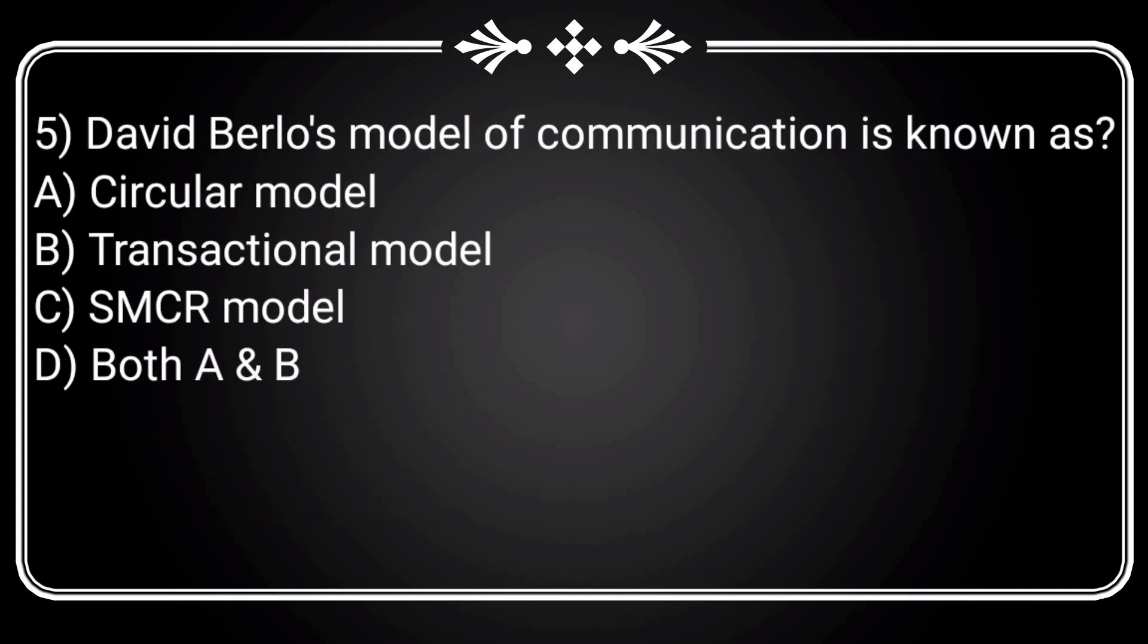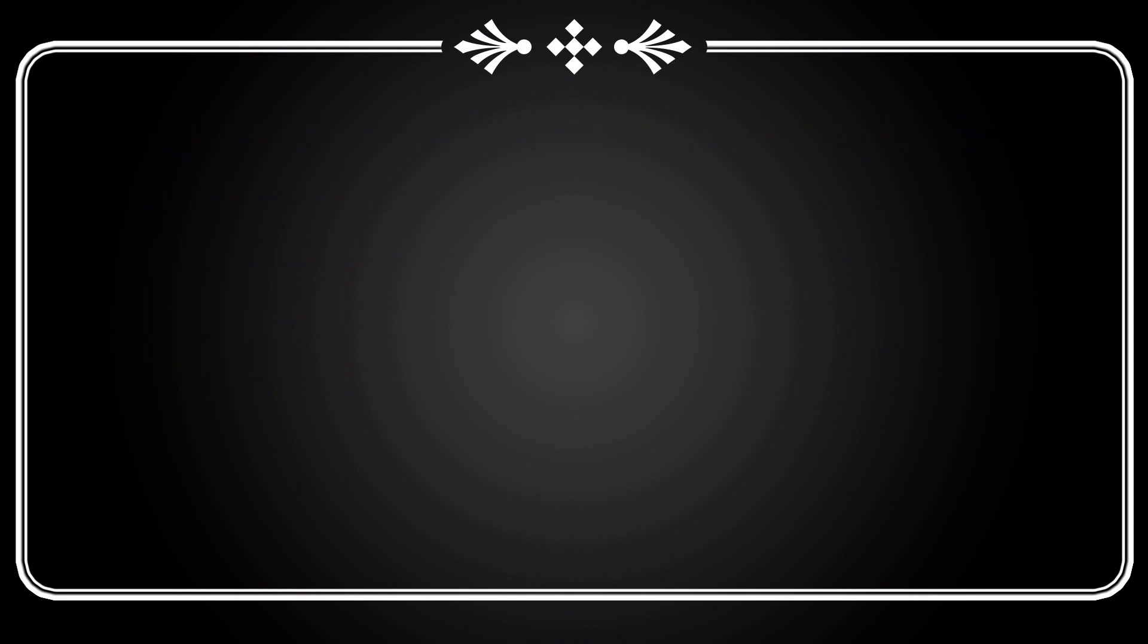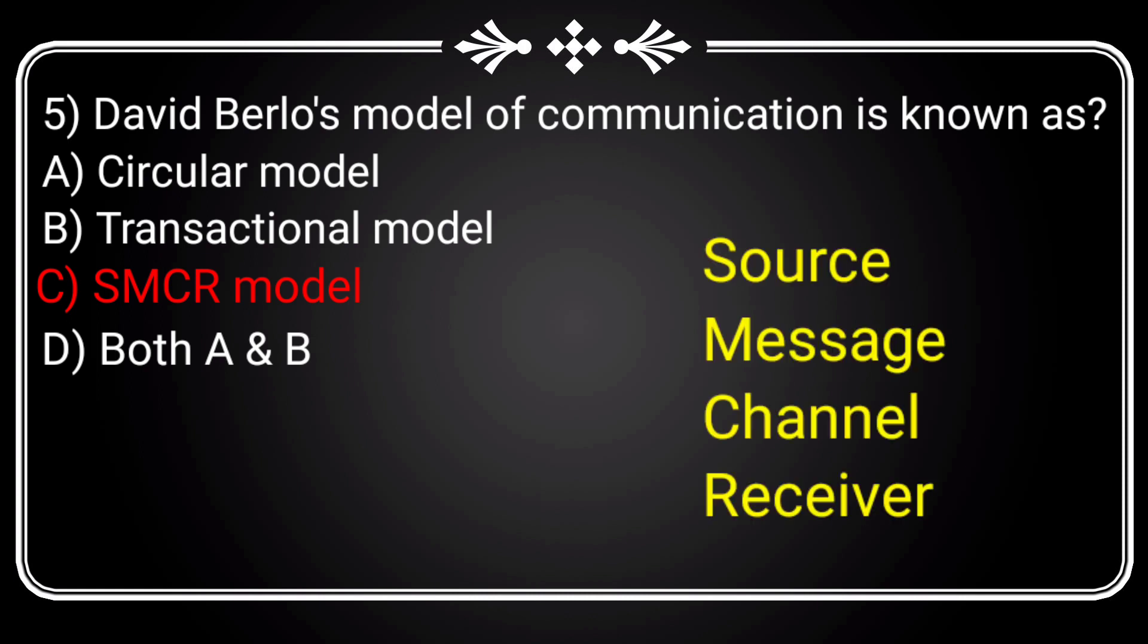Now we can move to our last question. David Berlo's model of communication is known as? Options are: A) Circular model, B) Transactional model, C) SMCR model, D) Both A and B. Answer is option C, SMCR model, which means Source, Message, Channel, Receiver.